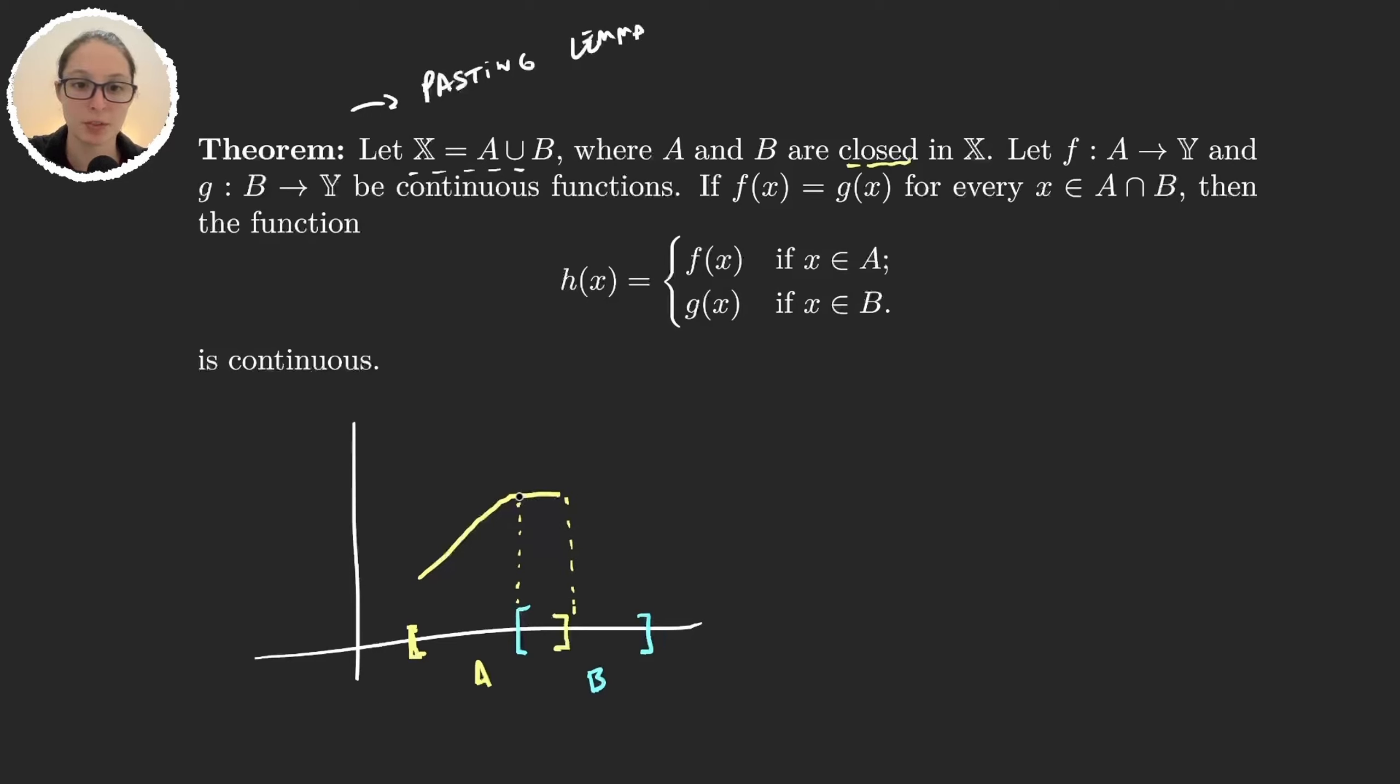And my function g does the same here, and then it goes like this. Then basically what this lemma is saying is that the function that is just pasting these two is continuous. And this happens only because here the values of f and g were the same, because this set here is a intersection b.